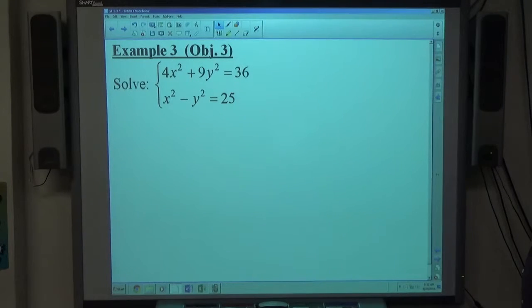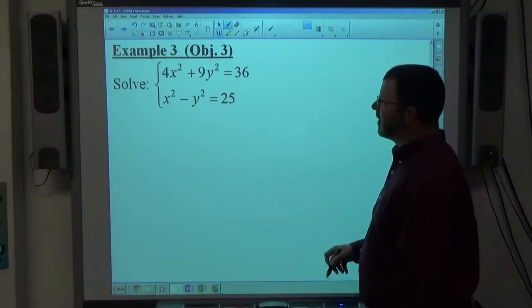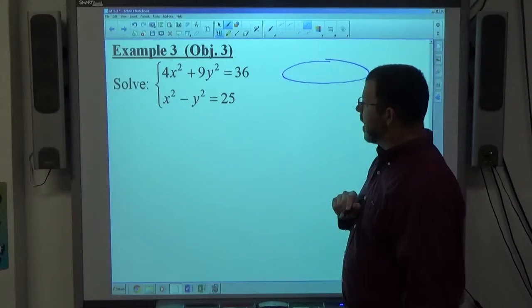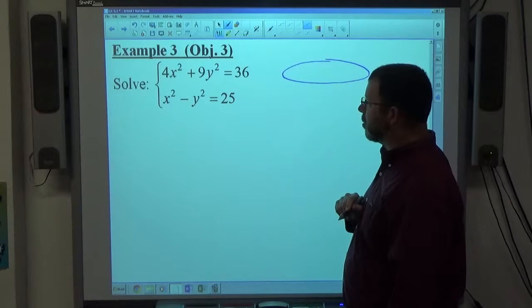Okay, example three. We have 4x squared plus 9y squared equals 36, that is an ellipse. And x squared minus y squared equals 25, that's a hyperbola.